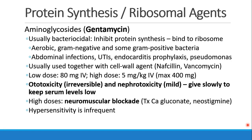The aminoglycosides, like gentamicin, are usually bactericidal. They inhibit protein synthesis by binding to the ribosome. They're effective against aerobic, gram-negative, and some gram-positive bacteria. They're useful in abdominal infections, urinary tract infections, also for prophylaxis against endocarditis, and for treatment of pseudomonas. We often see gentamicin being used together with a cell wall agent like nafcillin or vancomycin.